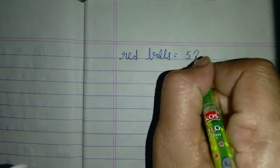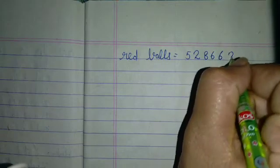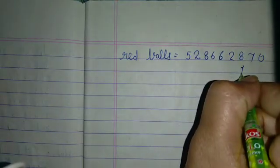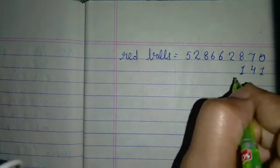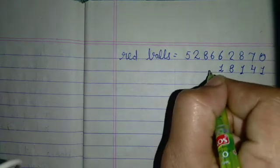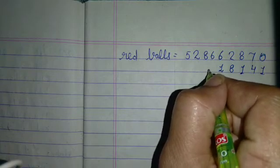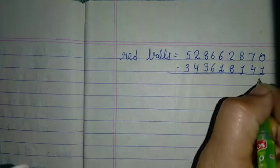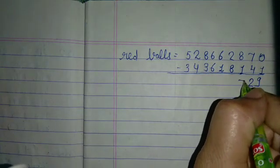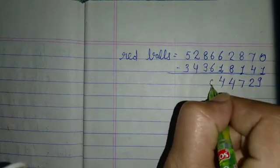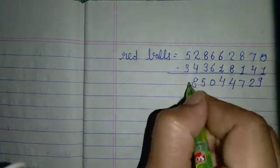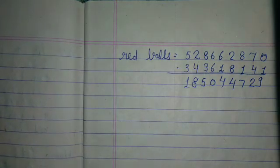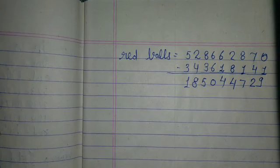Now, for the number of red balls, we subtract the total of white and blue balls from the total number of balls. So this is how we find the total number of red balls.